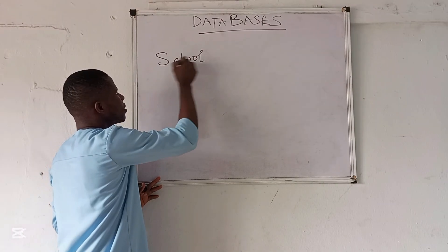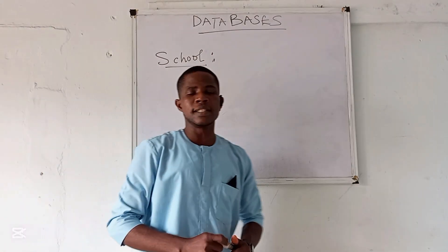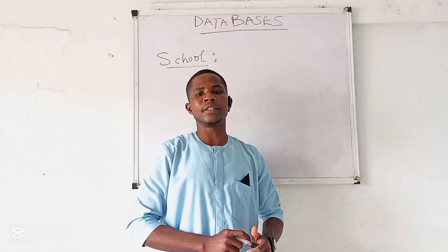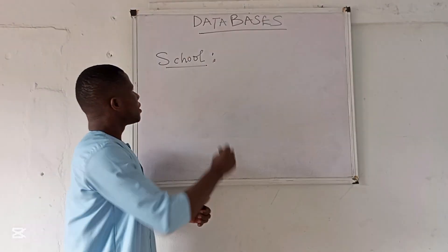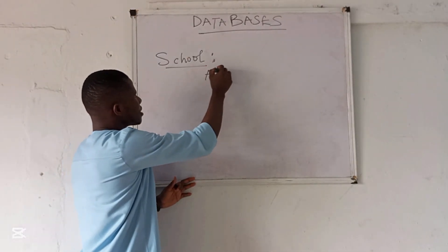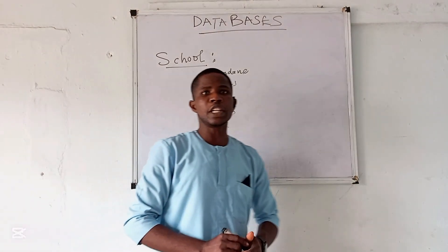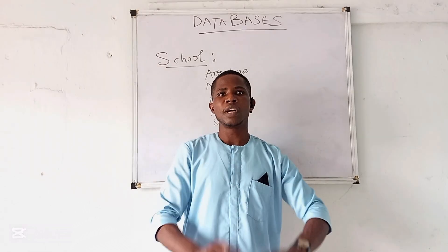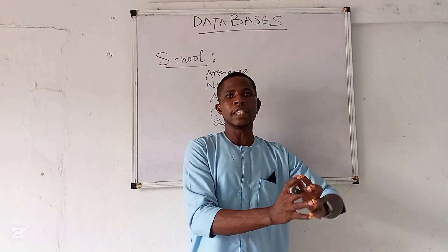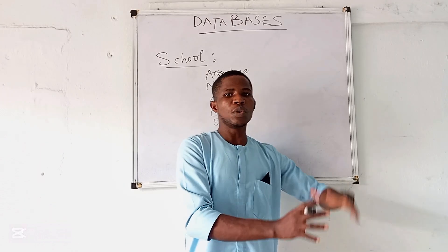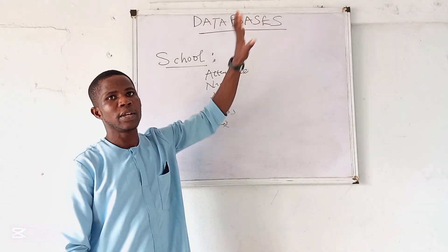Think of a school — you have a set of students and you need to keep track of their attendance, the classroom they are in, and their seats. If you have a hundred students in that school, you already have data which you can store in a database. So a database is like a library or a cabinet where you have data stored.